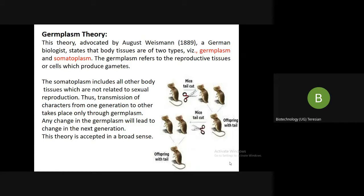Weismann conducted a famous experiment with mice. He cut the tail of the mice, then allowed fertilization between the two tailless mice, but the offspring born still had a tail. He repeated this experiment — cutting the tail and allowing cross-fertilization — for 20 generations. In each generation, he found that the offspring had a tail, indicating that the tail is under the control of somatoplasm, not germplasm. If there had been a change in germplasm, even the offspring would have shown that change. This is known as the theory of germplasm and it is the most widely accepted theory.